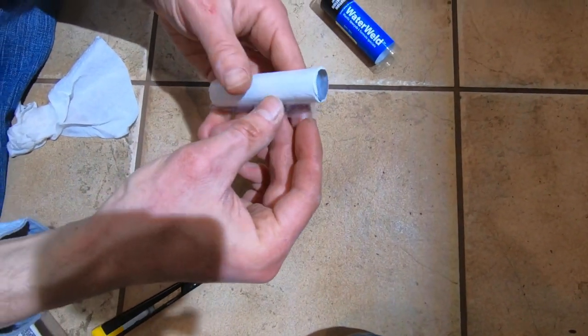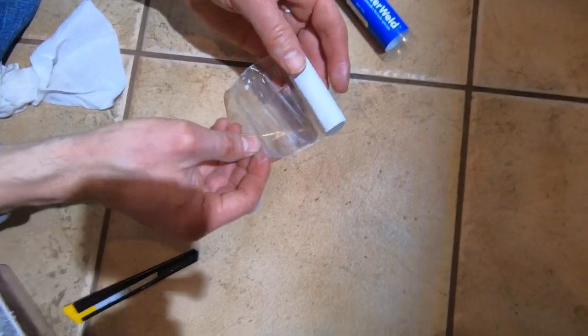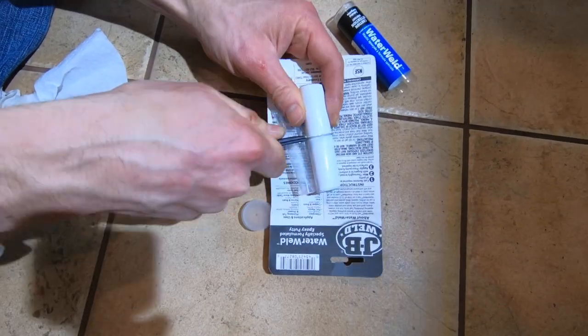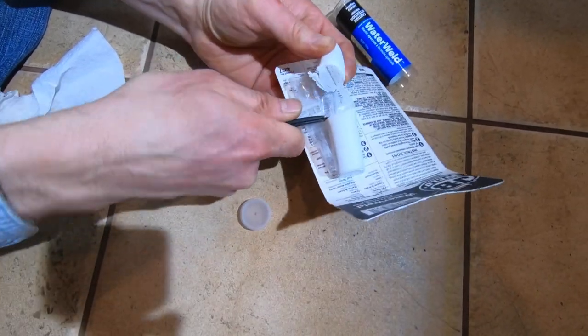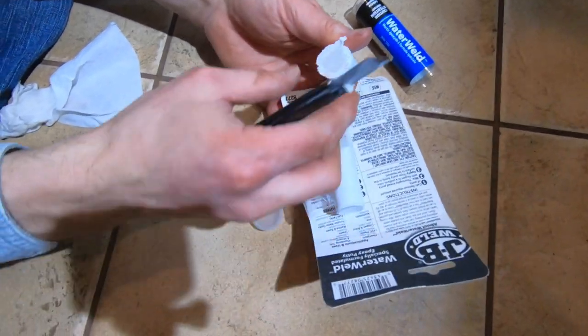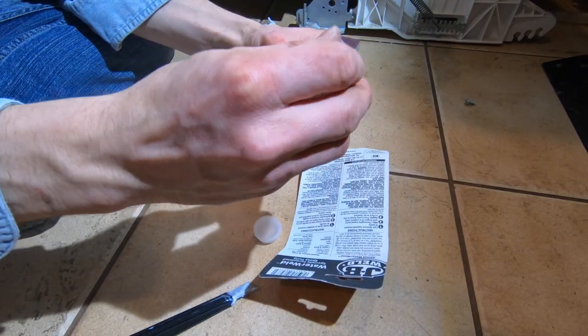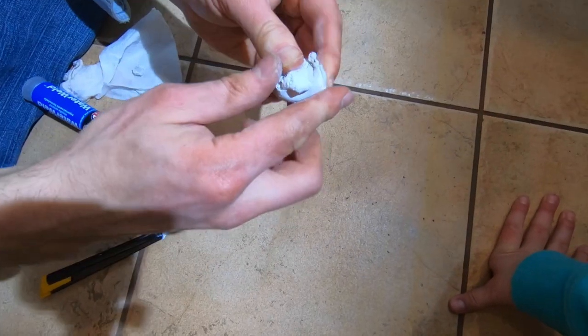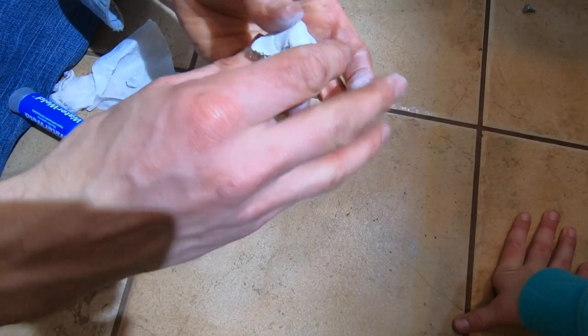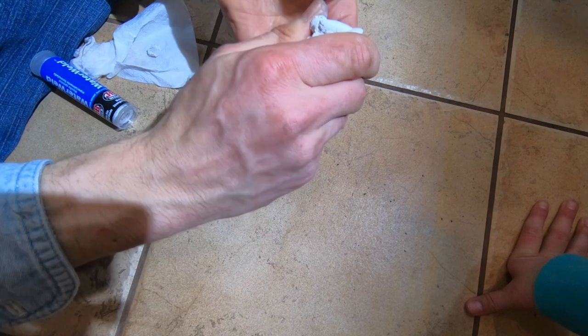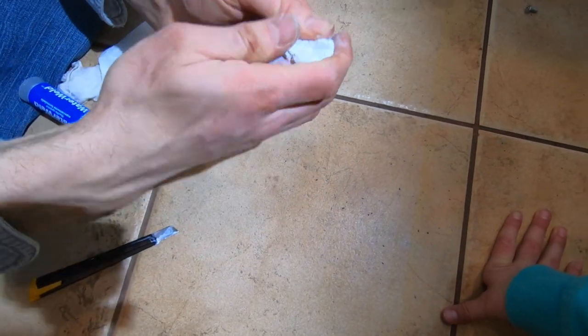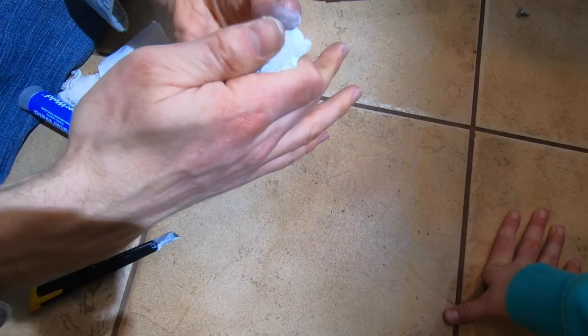So the water weld, we take the plastic off and see there's two parts in it. This is a putty. We want it to be a uniform color all the way throughout. So that two parts of that putty mixed together.